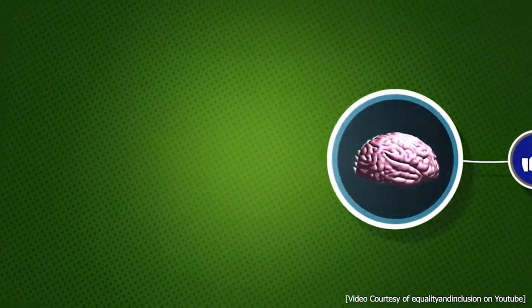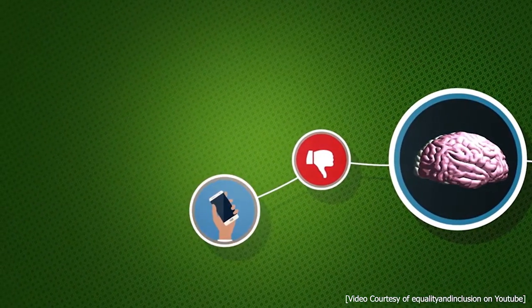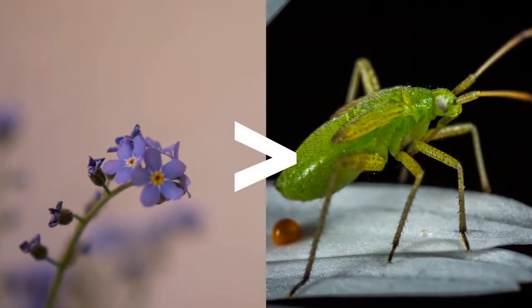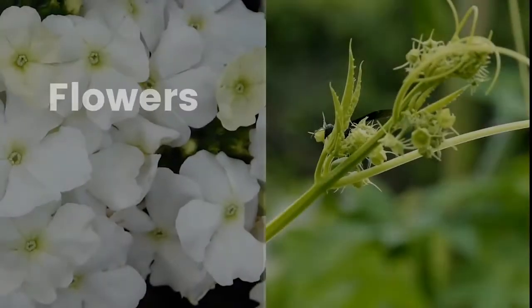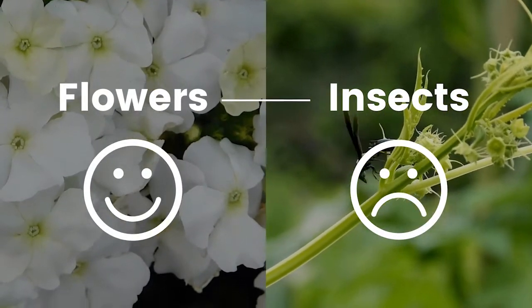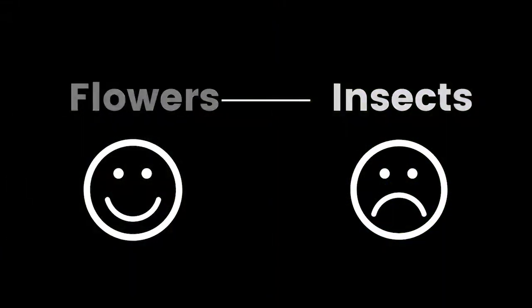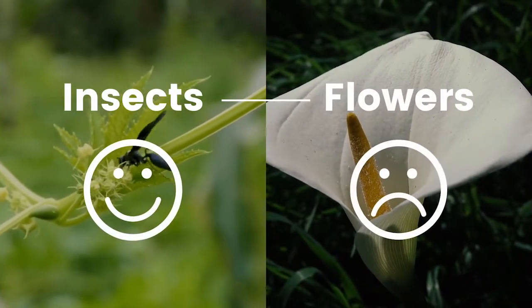The IAT assesses the strength of your subconscious associations between different objects, which psychologists believe lead to implicit biases. The logic behind it is that an implicit bias exists if the test-taker responds to a pair of words that correspond to their implicit belief faster than a pair that contradicts it. For example, the test will reveal that you implicitly prefer flowers over insects if you respond faster to flowers paired with good and insects with bad, compared to insects with good and flowers with bad.